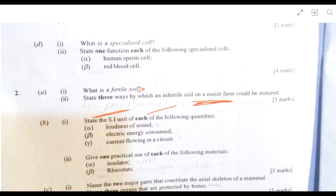Then 2B, state the SI units of each of the following quantities. Loudness of sound: decibels. Electrical energy: joule. It's energy, so energy is joule. Current flowing in the electrical circuit: ampere. You see, I mentioned it. You have electricity again.